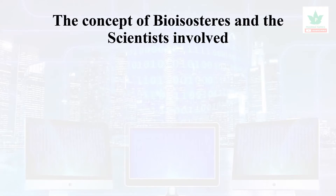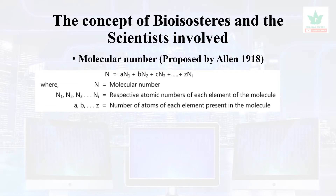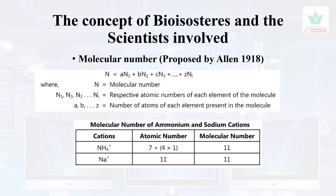Many scientists have worked in this area. First, the molecular number concept was proposed by Allen. It considers the number of atoms and their atomic numbers. For example, ammonium has nitrogen (atomic number 7) plus 4 hydrogens (atomic number 1 each), totaling 11 — the same as sodium's atomic number 11 — so they can be interchanged to increase activity or alter kinetic properties.